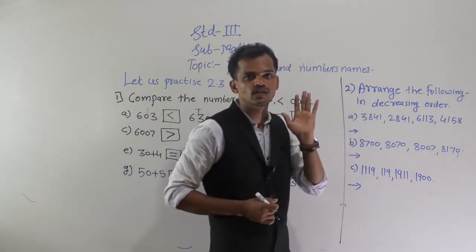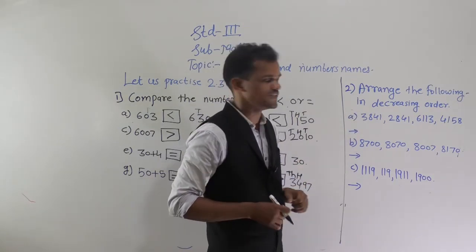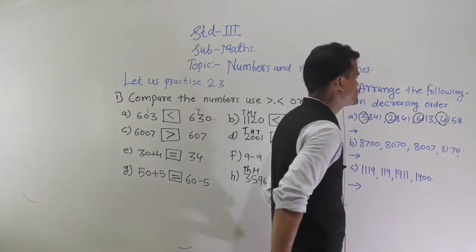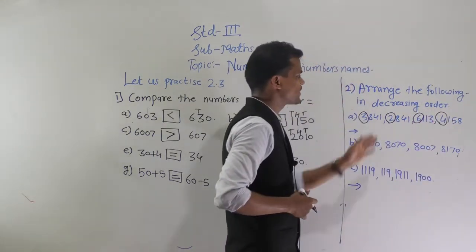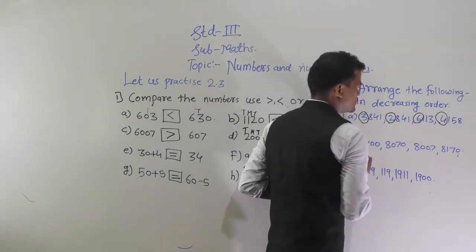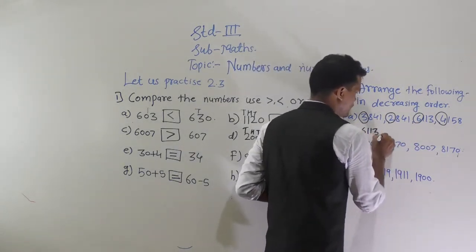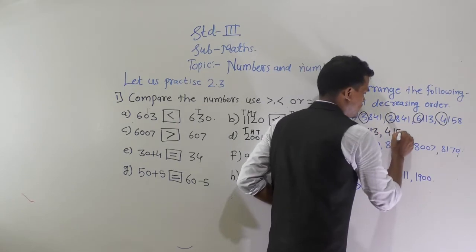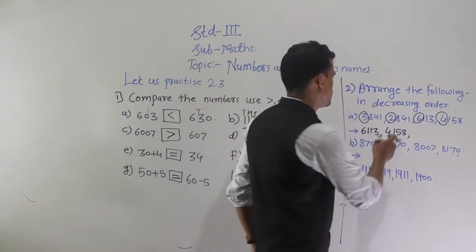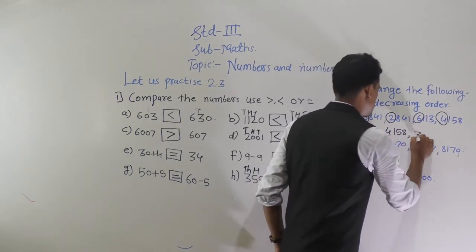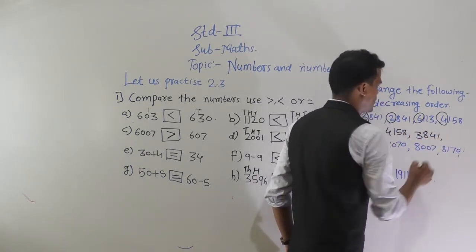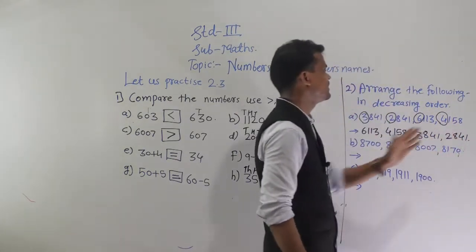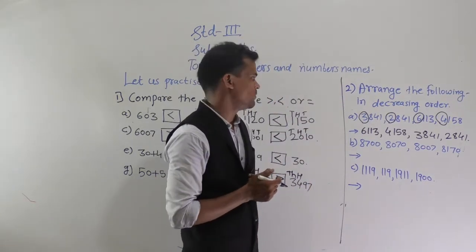These are 4-digit numbers, so we compare the thousands place digit: here 3, here 2, here 6, and here 4. The greatest number is 6113, then 4158, then 3841, and at last 2841. This is the decreasing order of the given numbers.